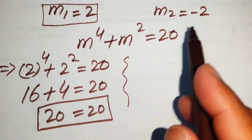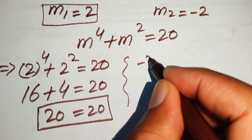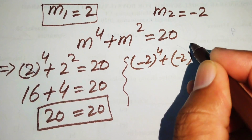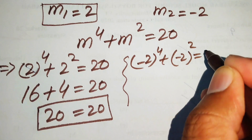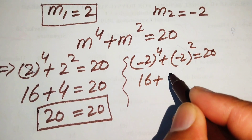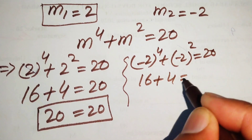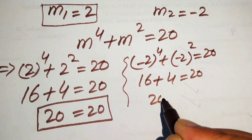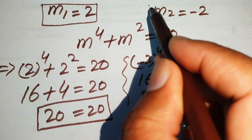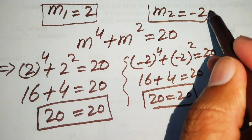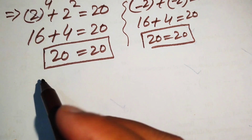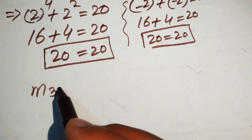Now we check the second root m₂ equals minus 2. Substituting it: (minus 2) to the power of 4 plus (minus 2) squared equals 20. Minus 2 to the power of 4 is also 16 and minus 2 squared is also 4, giving 16 plus 4 equals 20, so 20 equals 20. This means the second solution also satisfies our given equation. Now we move to our third and fourth solutions.